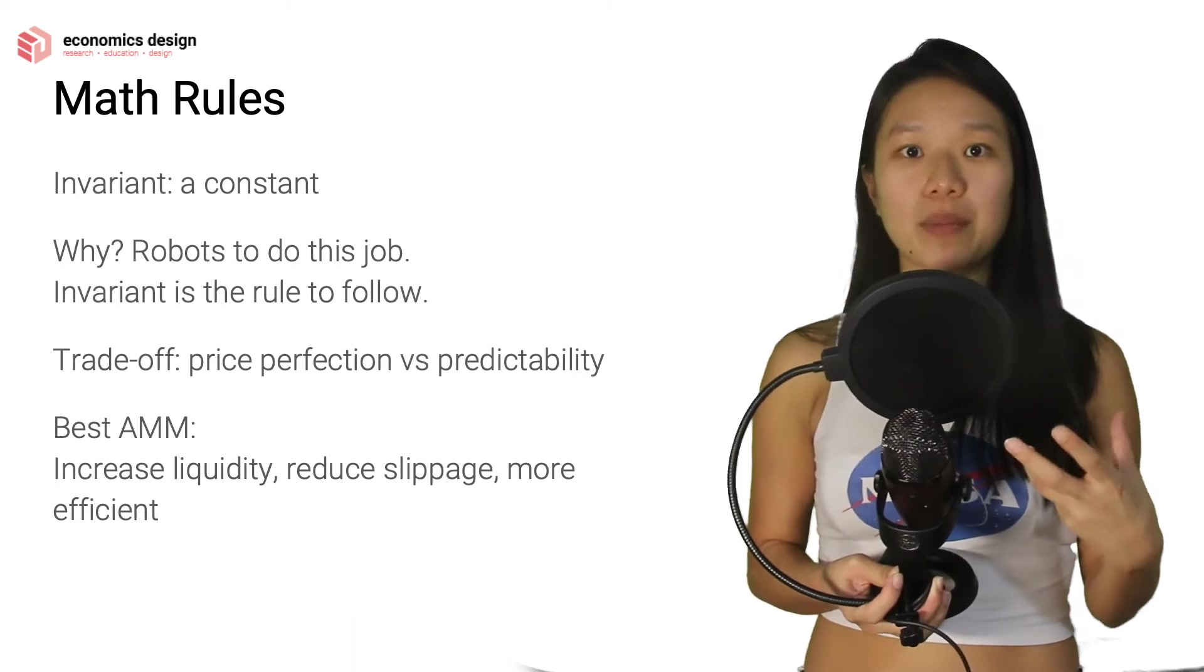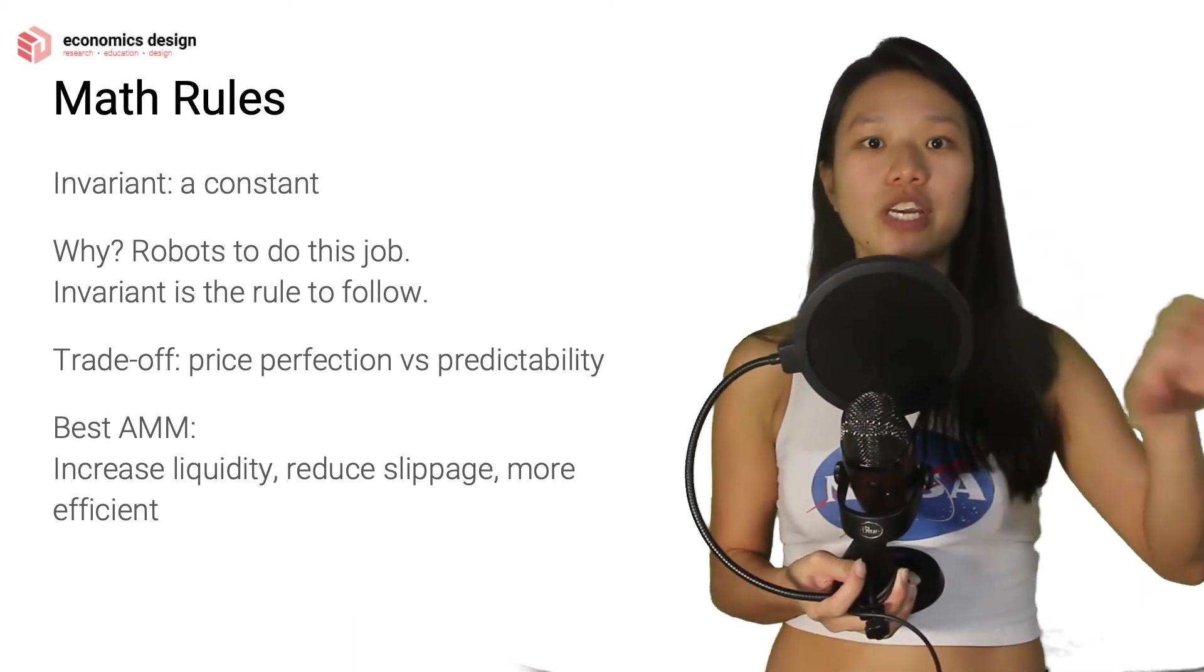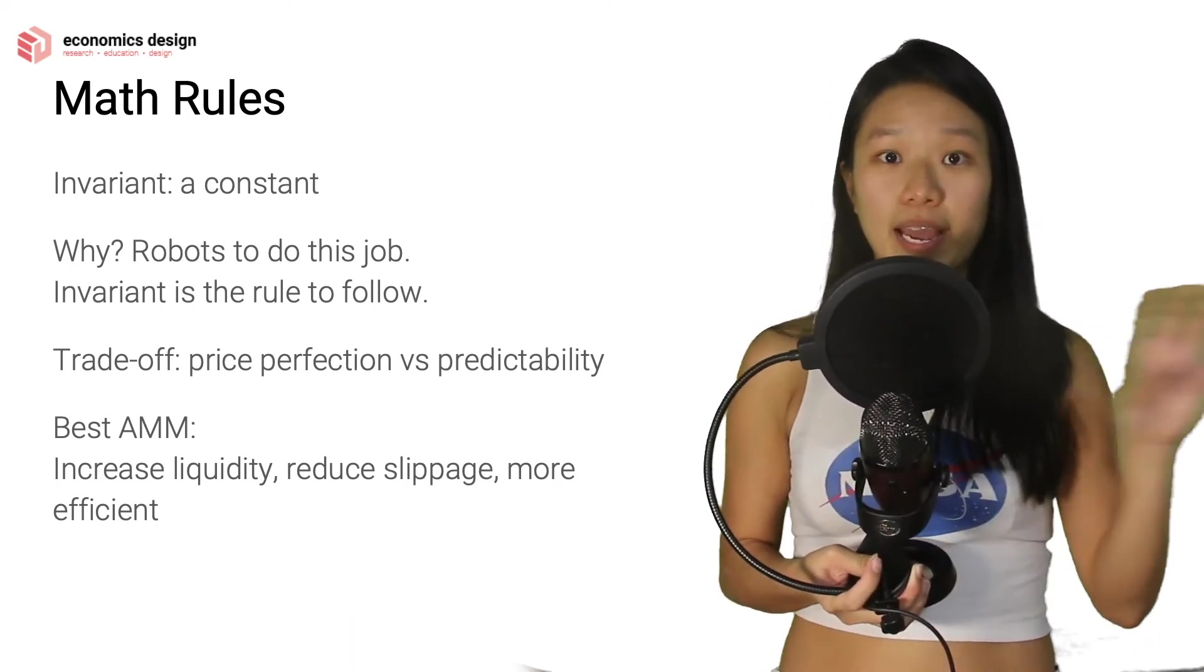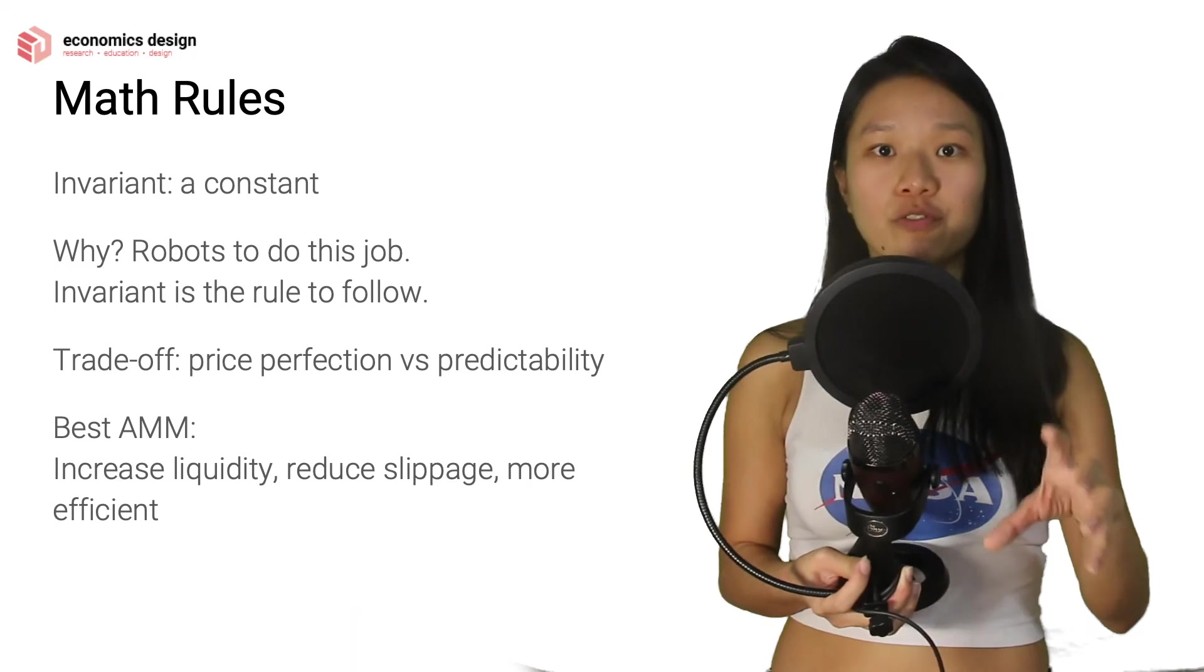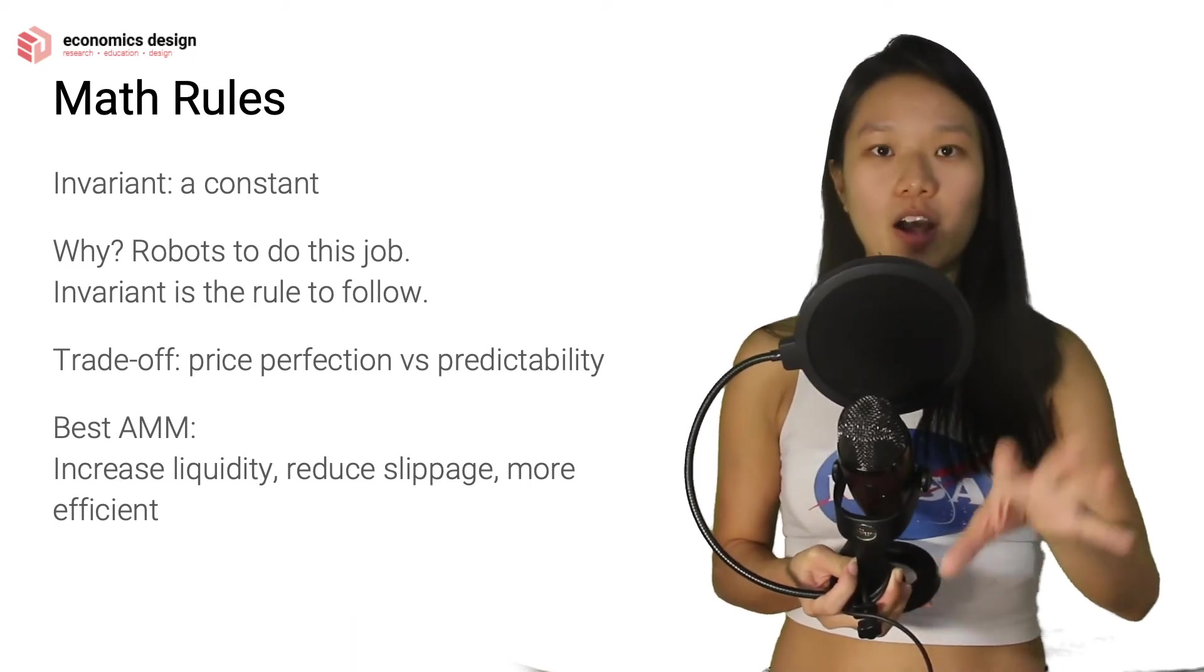So increased liquidity is what I mentioned in network effects just now where you need to have enough liquidity, enough tokens so that people can trade in large volumes. And by having that large volume, then you will reduce slippage fees because of how the math is calculated.